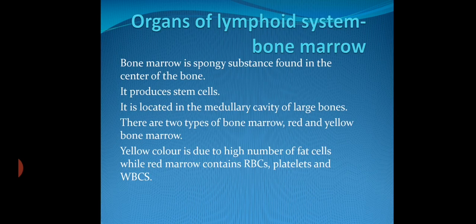The bone marrow is the spongy substance found in the center of the bone. The bone marrow is the site of creation of all types of cells in our body. It also produces stem cells, which were discussed in our first lecture on the hemopoietic system. Stem cells have a very significant role in immunity and are derived from bone marrow.